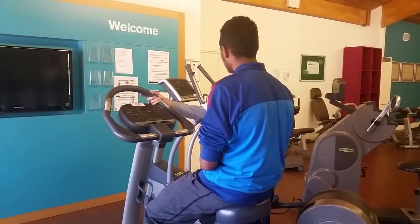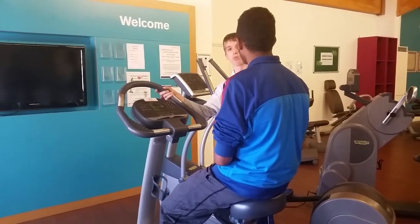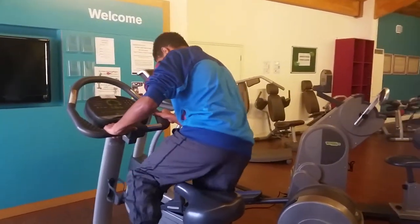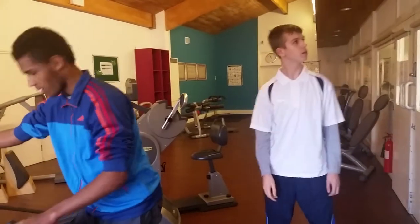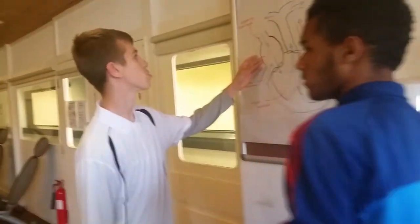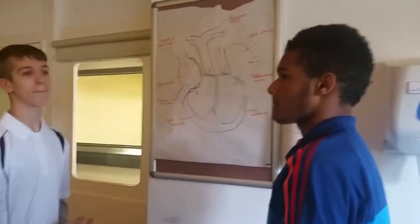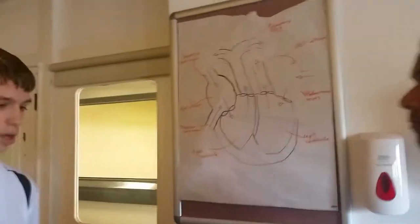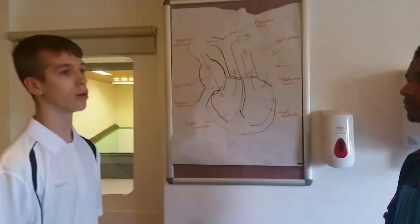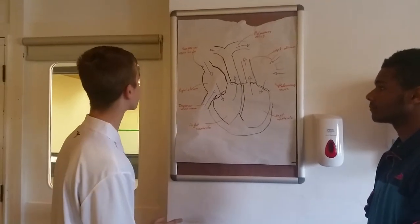I'm just going to explain to you about how the cardiovascular system works, so if you'd like to stand over here. Here we've got a poster about the heart and the different components of the heart. The heart's main function is to pump the blood around the body, supplying the body with blood in order to live and be healthy.